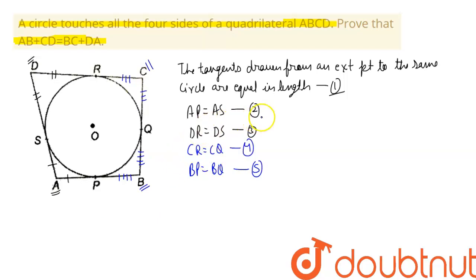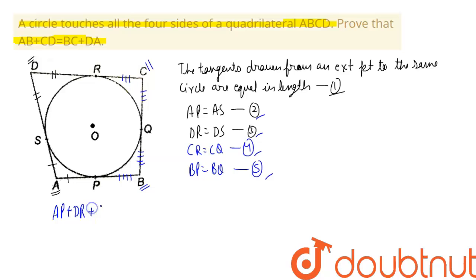Now we are going to sum up all four equations. Adding them together, on the left-hand side we get AP plus DR plus CR plus BP, and on the right-hand side we have AS plus DS plus CQ plus BQ.